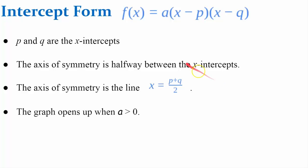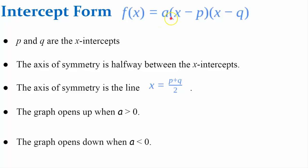The graph will open up if a is greater than 0, and opens down if a is less than 0 — so if a were negative, it's a reflection in the x-axis. Also, a value of a greater than 1 indicates a vertical stretch, and if the absolute value of a is between 0 and 1, it is a vertical shrink.